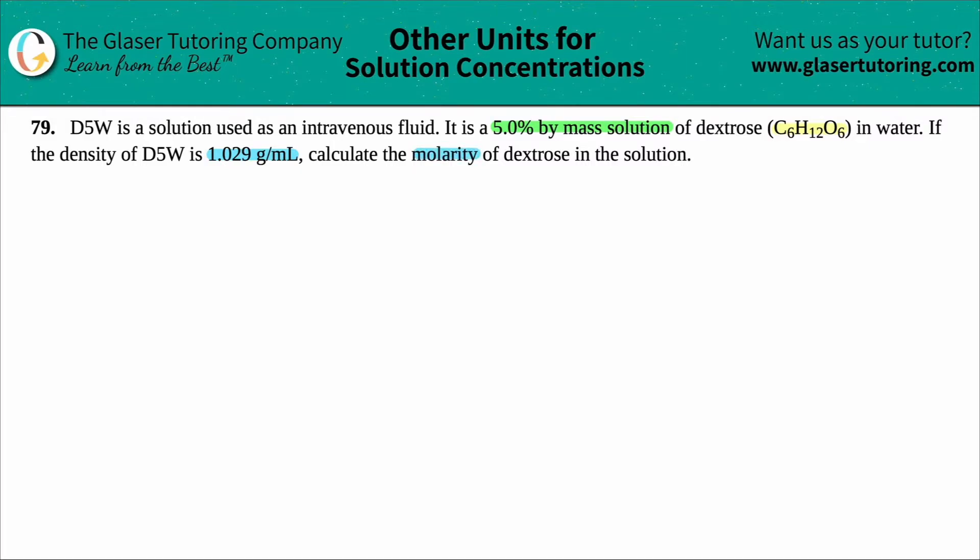So what did they give us? They told us that we have dextrose, which is basically sugar, C6H12O6, and we have a 5% mass solution of that, and we also have a density value, but they want us to find the molarity.